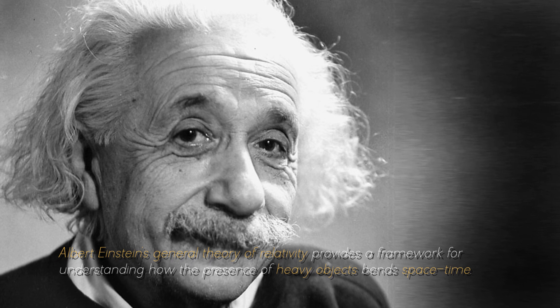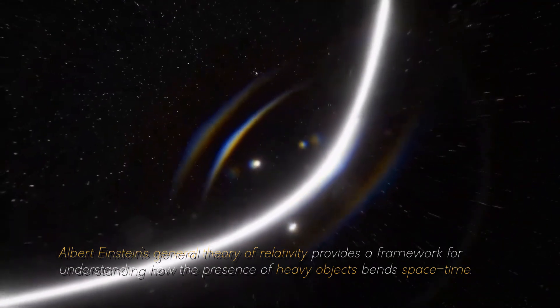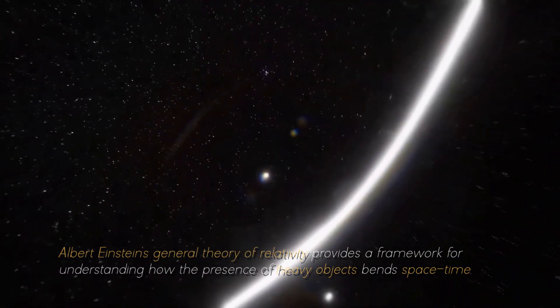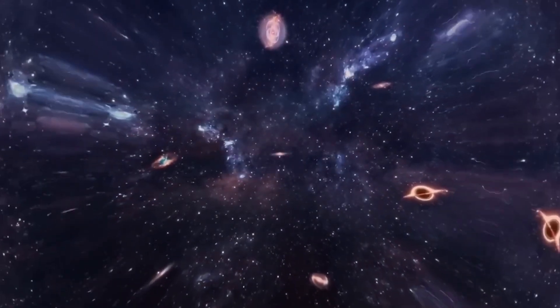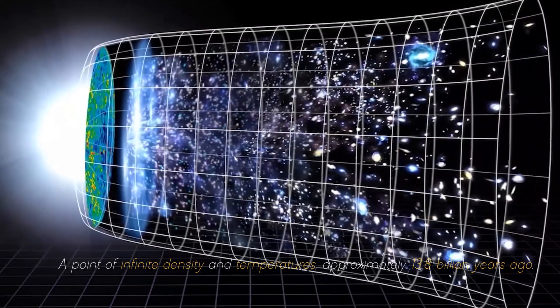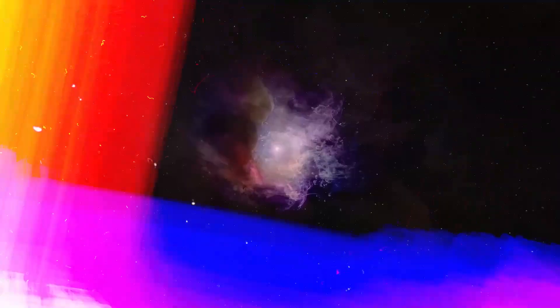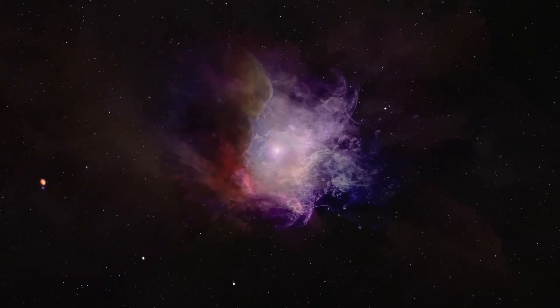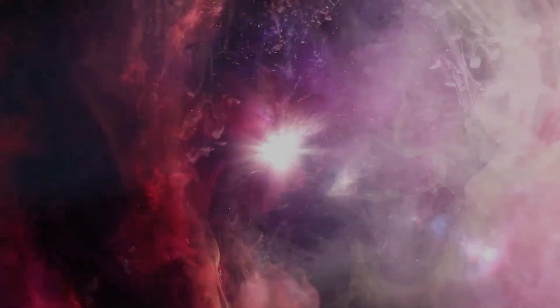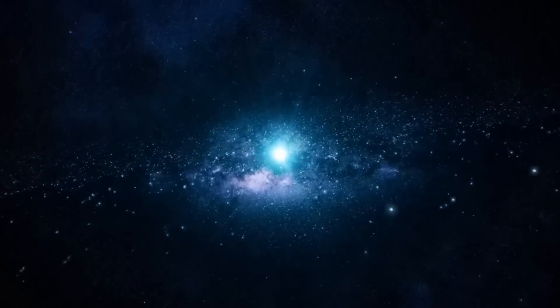Albert Einstein's general theory of relativity provides a framework for understanding how the presence of heavy objects bends space-time. According to this theory, the cosmos originated as a singularity, a point of infinite density and temperature approximately 13.8 billion years ago. All matter and energy were compressed into an extremely small, hot region. At this point, the cosmos began to expand with a rapid and violent event known as the Big Bang.